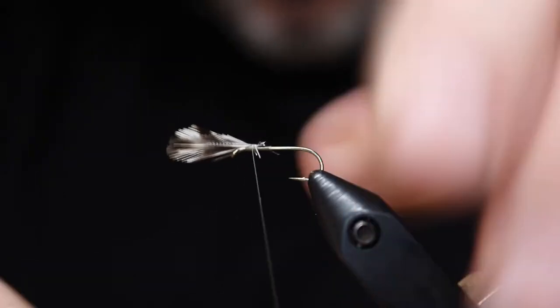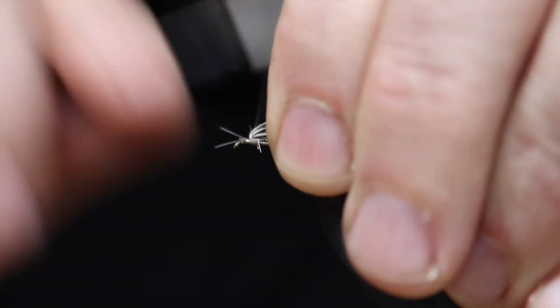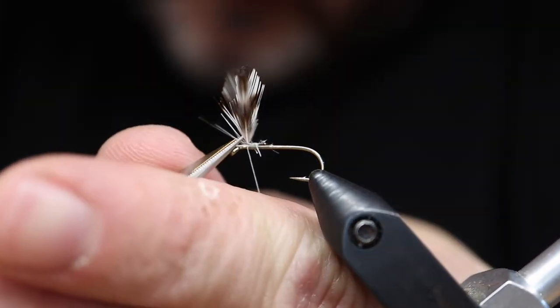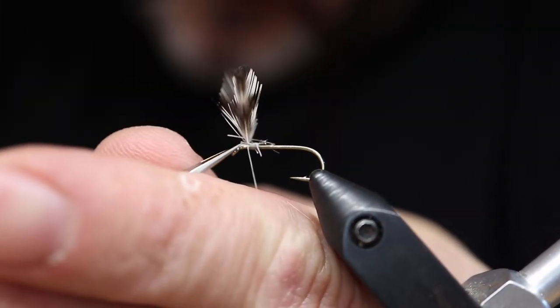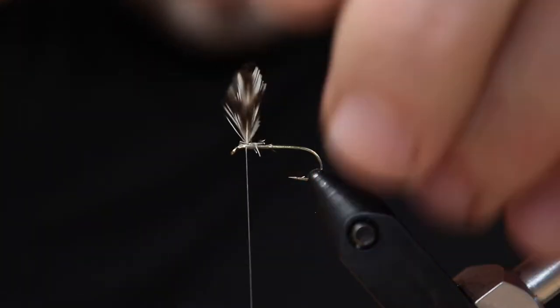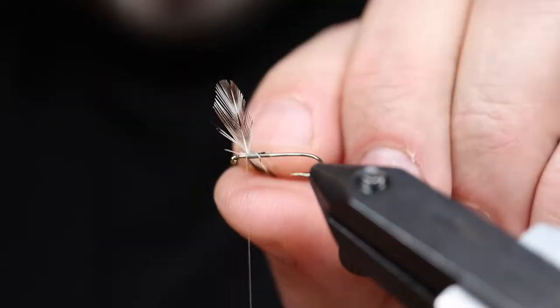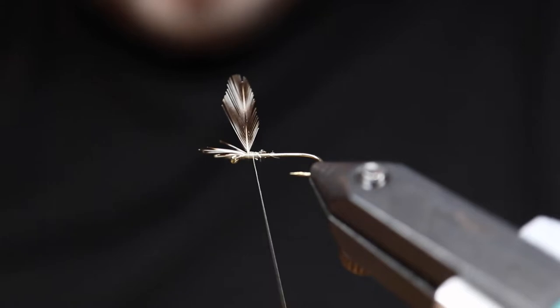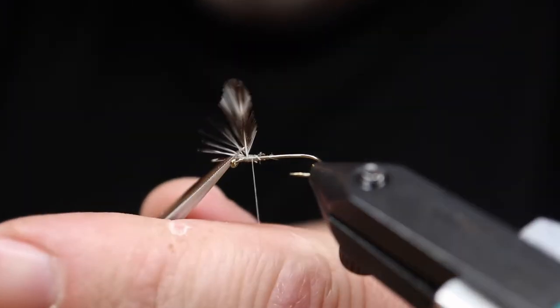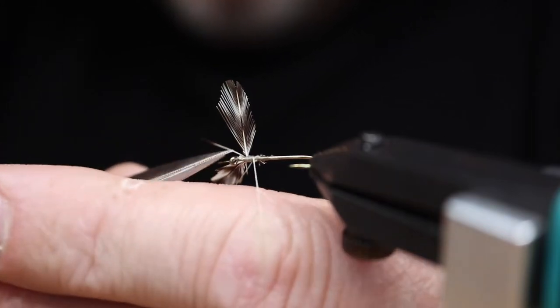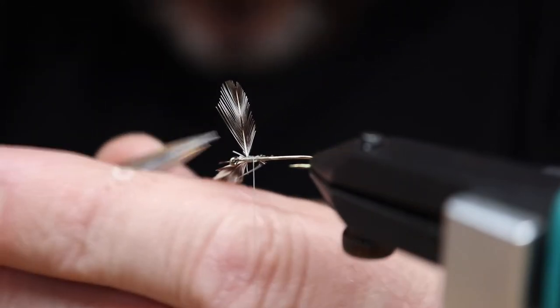These wings were tied up front on the hook, and they were tied advanced, meaning leaning forward, and semi-spent, so spread out. So I tied them pretty close to the top there. I'm doing a bunch of cross wraps to spread them out. Cleaning up these fibers as you catch them. Securing that wing in.